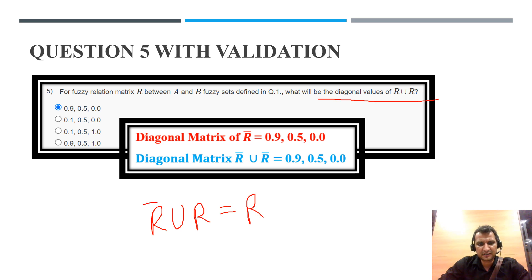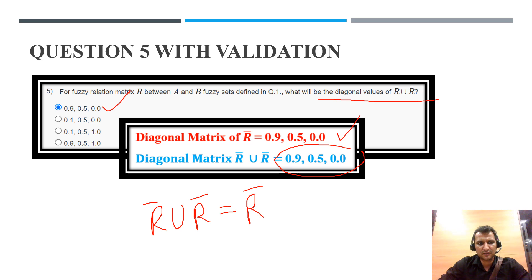Question 5: this is R complement union R complement, and R complement union R complement is equal to R complement. So the answer will be the same: 0.9, 0.5, 0. As per the given options, the correct option is correct.